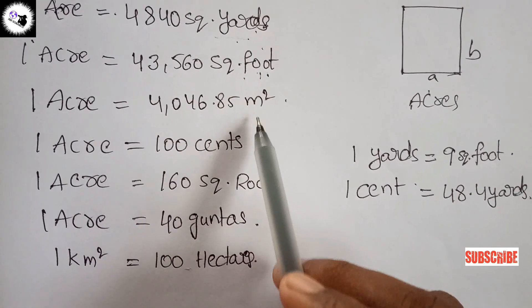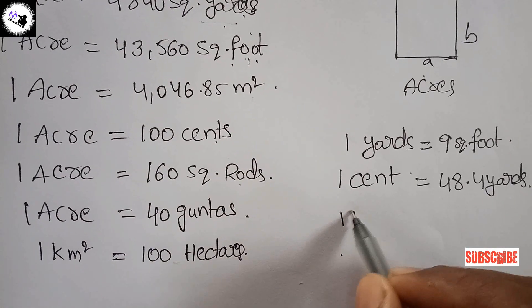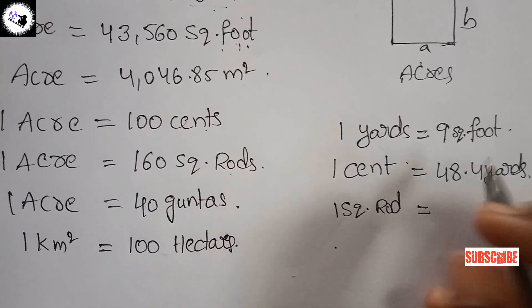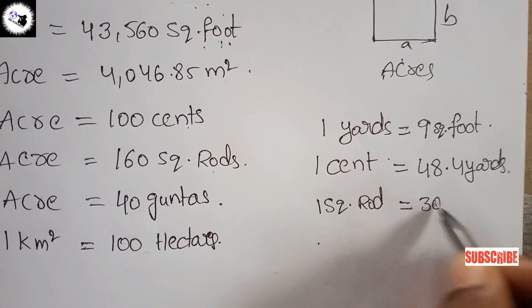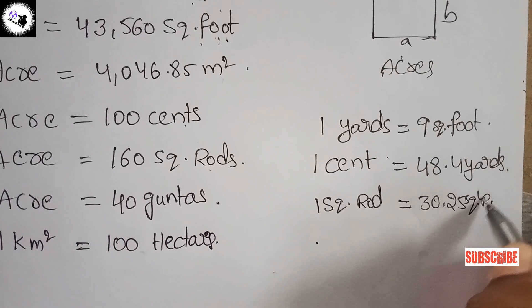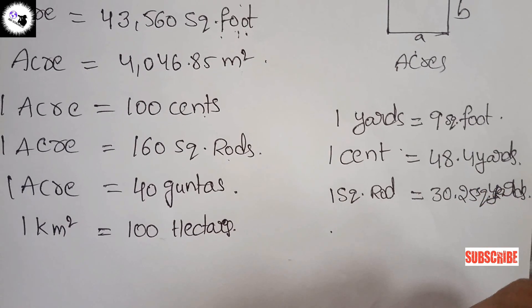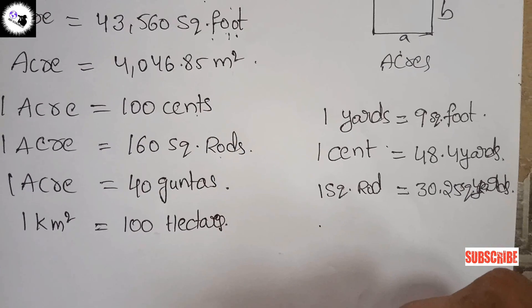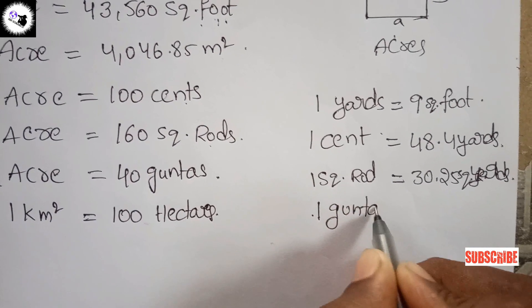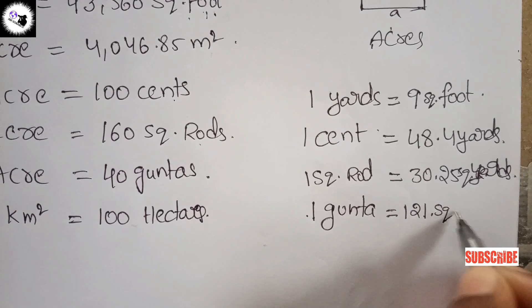Square foot and meter square conversions: one square rod is equal to 30.25 square yards. And one gunta is equal to 121 square yards.